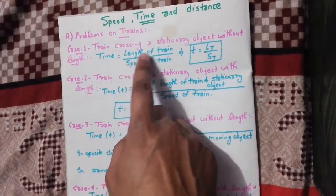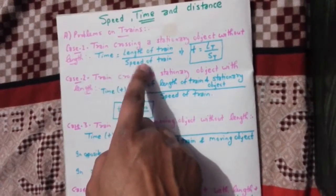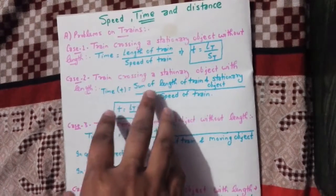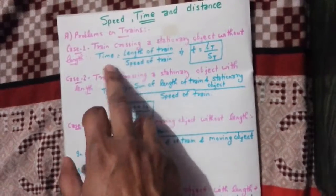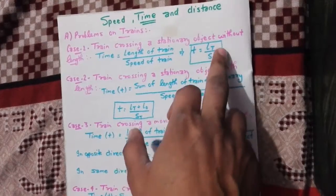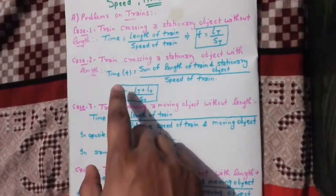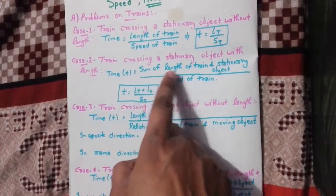So first, Case 1: in this train crossing a stationary object without length. Either one stationary object is a stationary object which does not have length. Time equals length of train upon speed of train.